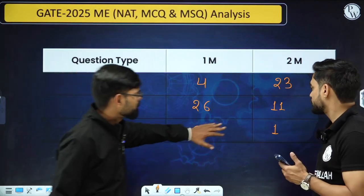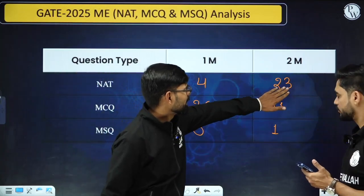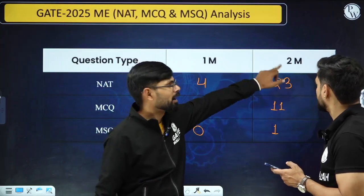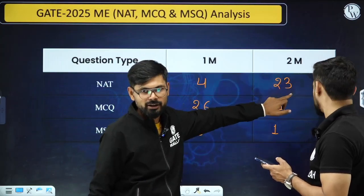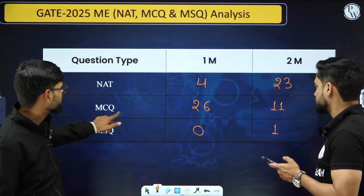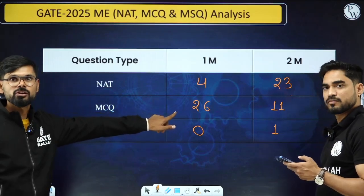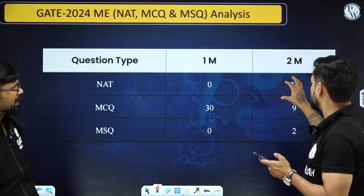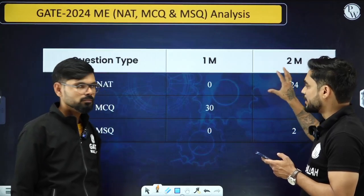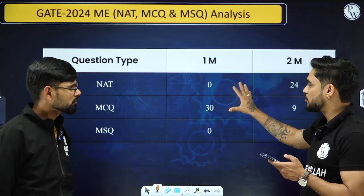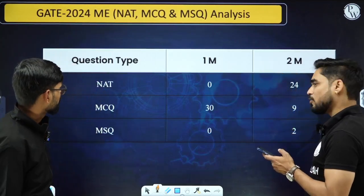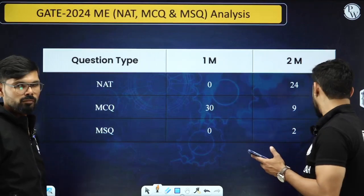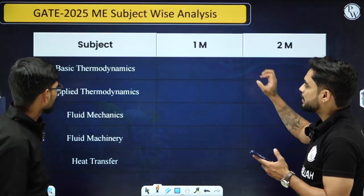One more conclusion you can draw: most NAT-type questions are two-mark questions, and MCQ-type questions are mostly one-mark questions. We have seen this pattern last year also — most two-mark questions are NAT and most one-mark questions are MCQ. Now we will discuss the weightage of different subjects, starting with thermal and fluid.